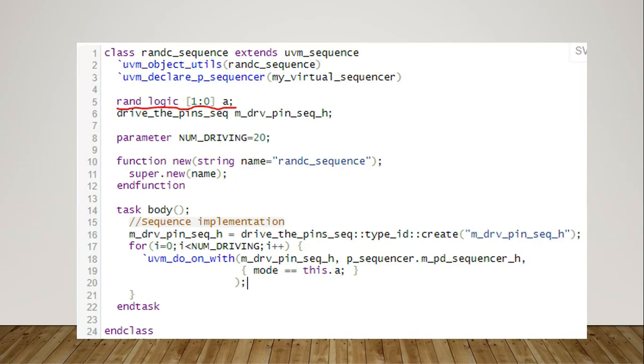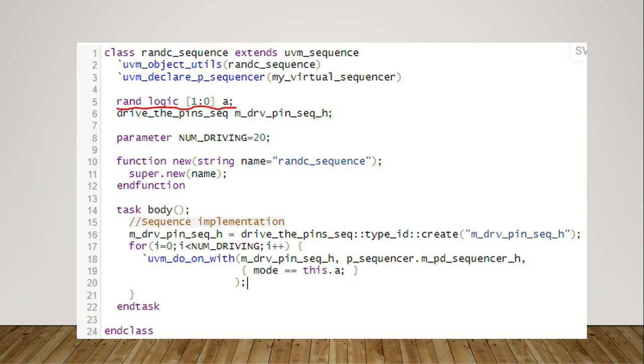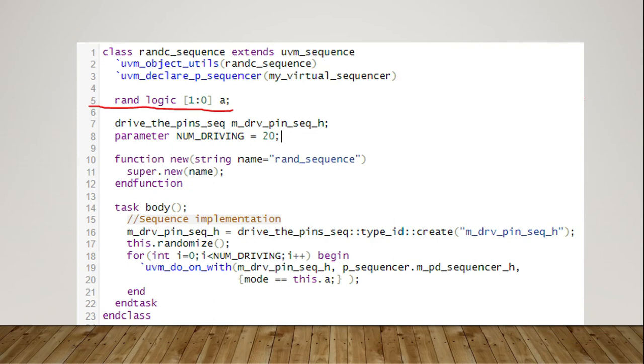Let's first define the random variable A. We can use constraint on this random variable so that already generated values are not repeated until all possible values are covered.